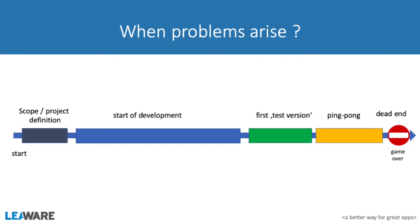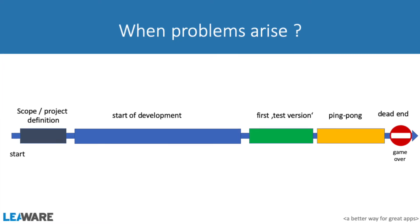The client starts testing the solution and can see very fast that it is crashing, that it's not working as expected, and they become very angry. Then something starts that we call ping pong — the client sends bugs to the development company, in most cases in a Word document or Excel, and developers try to fix it. No one remembers what was agreed in the beginning. After some such iterations, we reach what we call a dead end — game over and the project is stopped.